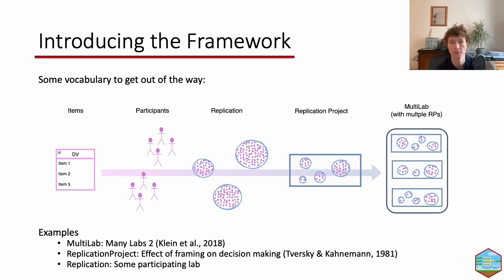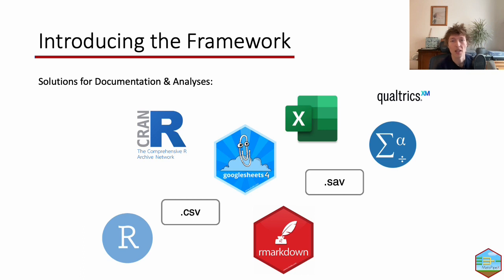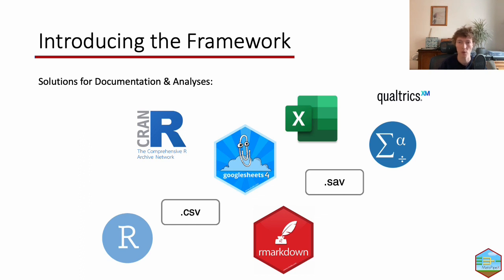Meta-analyses aggregate data for each replication project, and a multi-lab might span multiple replication projects. But despite this very similar structure, the solutions found to document and analyze data were rather unique across projects. The software used was usually R, but sometimes SPSS or other software. The code structure itself was very unique to each multi-lab, and by whose data was aggregated also varied — sometimes done by replication sites so we don't find the actual raw data.